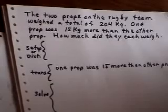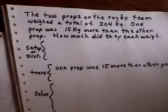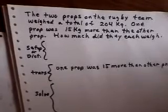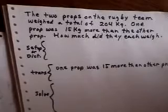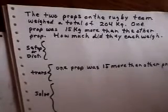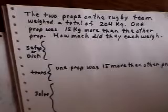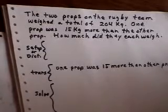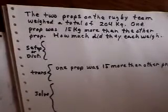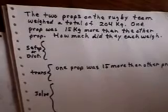This is the first of a type of what we call a total problem. Here we have two props on the rugby team and they weigh a total of 204 kilograms. One prop is 15 kilograms more than the other. How much did they each weigh?